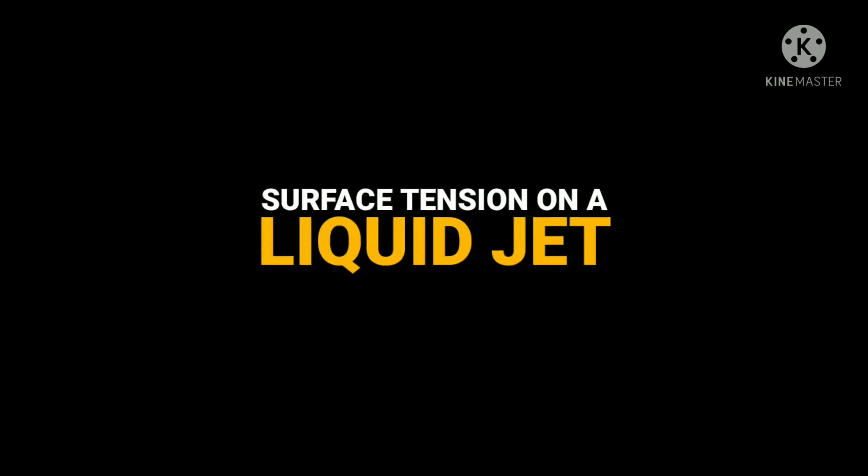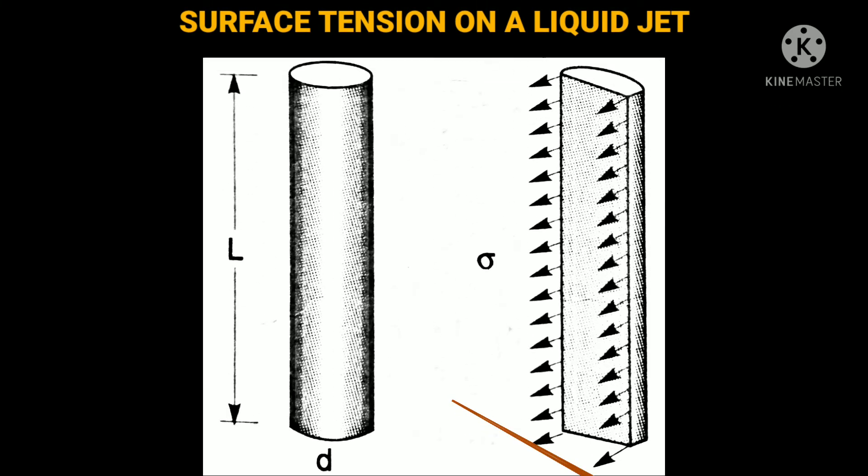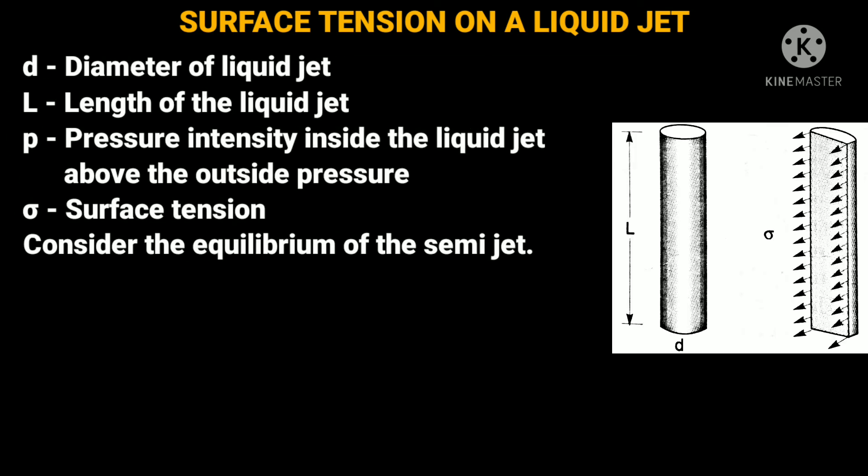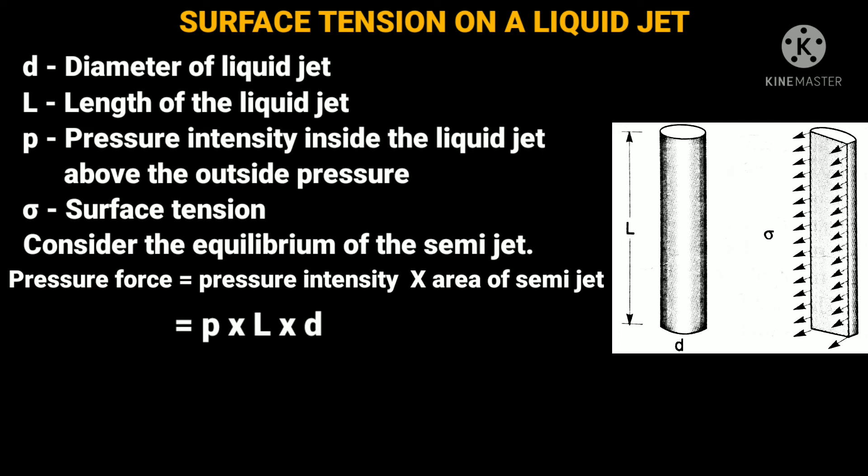And finally, what will be the surface tension on a liquid jet? Consider a liquid jet having diameter d and length L as shown here. Consider the equilibrium of the semi-jet. We have pressure force is equal to pressure intensity into area of semi-jet, and force due to surface tension will be sigma into 2L. Here, 2L means the surface tension acts on surface of liquid jet on both sides as shown here.